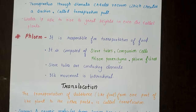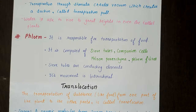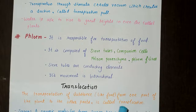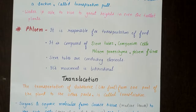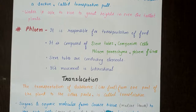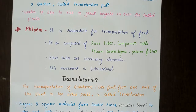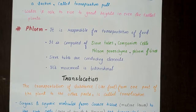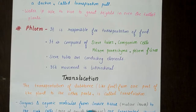Whenever food is made in the leaves of plants through photosynthesis, it needs to be transported to different parts — this process is called translocation. The food substance, which is sucrose in plants, is moved from one part of the plant body to another. It moves from source tissue — such as mature leaves where food is made — to sink cells, which are areas of growth and storage where the food is delivered.